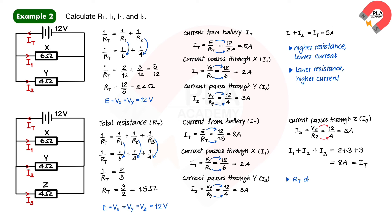Thus, the total resistance of a parallel circuit decreases as the number of resistors in the circuit increases. The battery current increases as the total resistance of the circuit decreases. However, I_1 and I_2 remain the same, so the battery current increases to share into resistor Z.